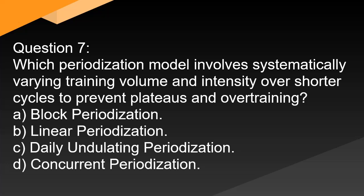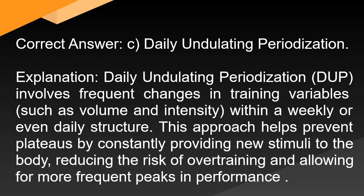Question 7: Which periodization model involves systematically varying training volume and intensity over shorter cycles to prevent plateaus and overtraining? A. Block periodization. B. Linear periodization. C. Daily undulating periodization. D. Concurrent periodization. Correct answer: C. Daily undulating periodization (DUP). DUP involves frequent changes in training variables such as volume and intensity within a weekly or even daily structure. This approach helps prevent plateaus by constantly providing new stimuli to the body, reducing the risk of overtraining and allowing for more frequent peaks in performance.